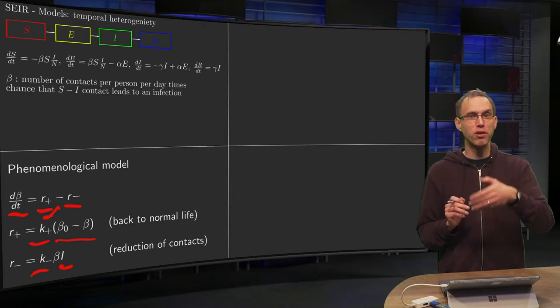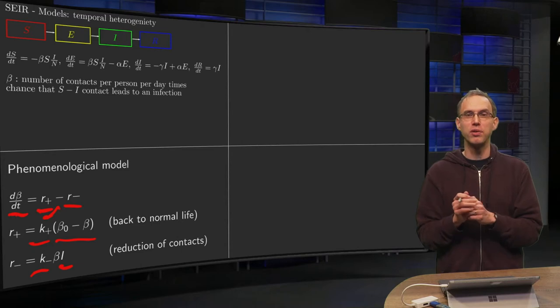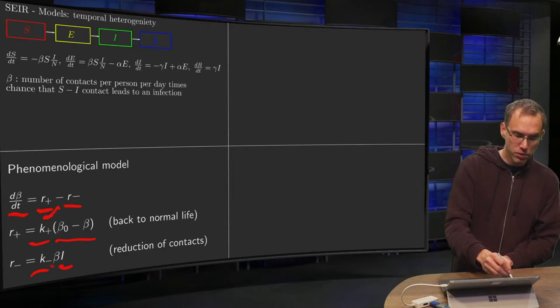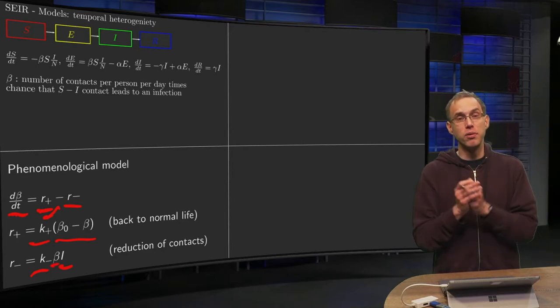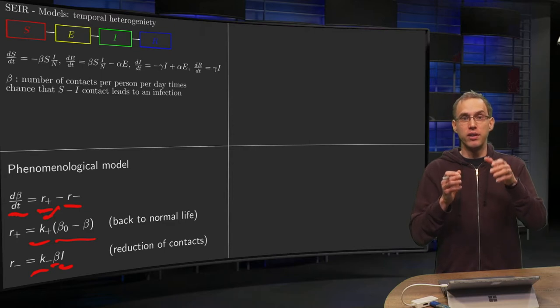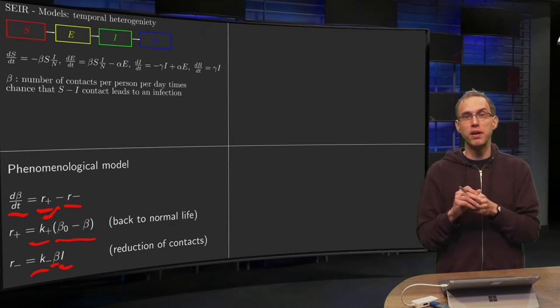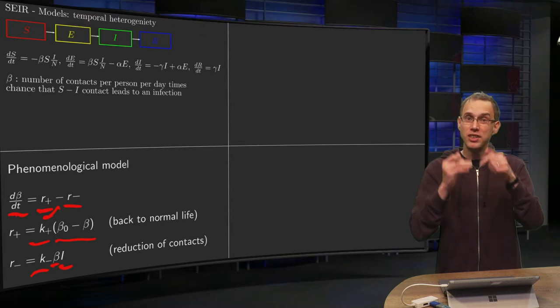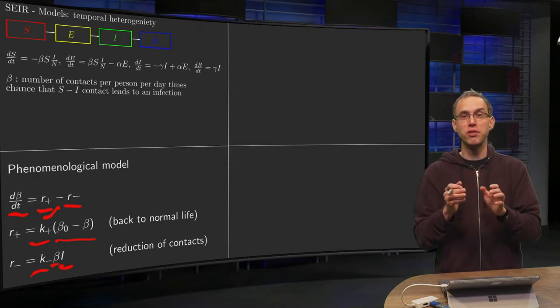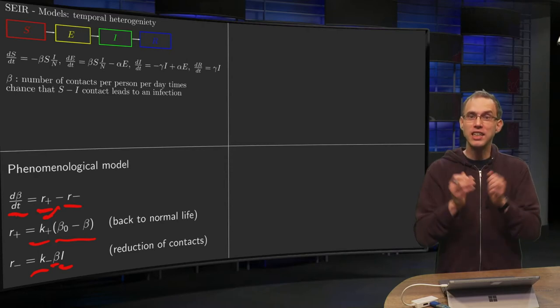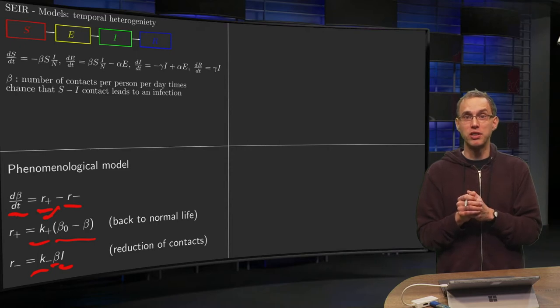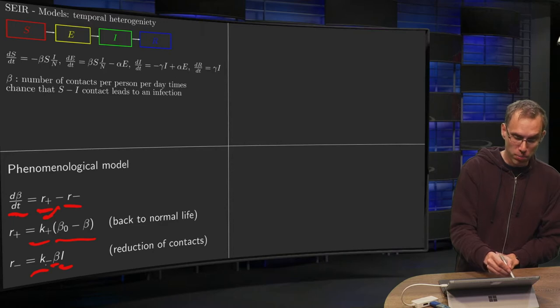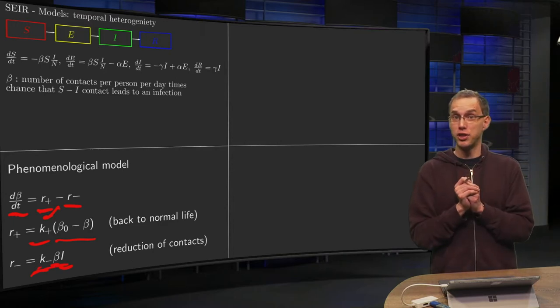You can make it more complex with I² or other functions, but let's take the simplest option and just use I. Furthermore, we put a beta term, which means the rate of decrease also depends on beta. If there are a lot of contacts in place, it's easier to decrease. If people are having no contacts already, it's harder to decrease further. So we put r minus also proportional to beta.